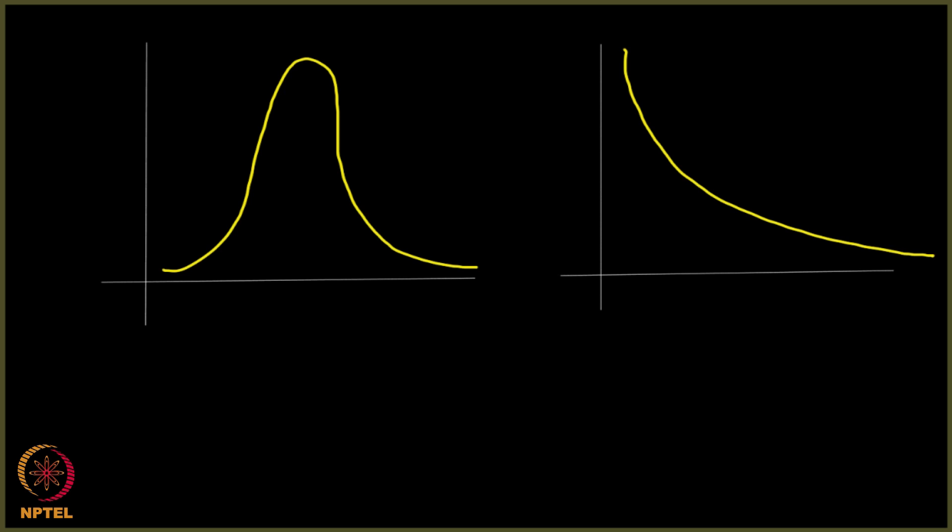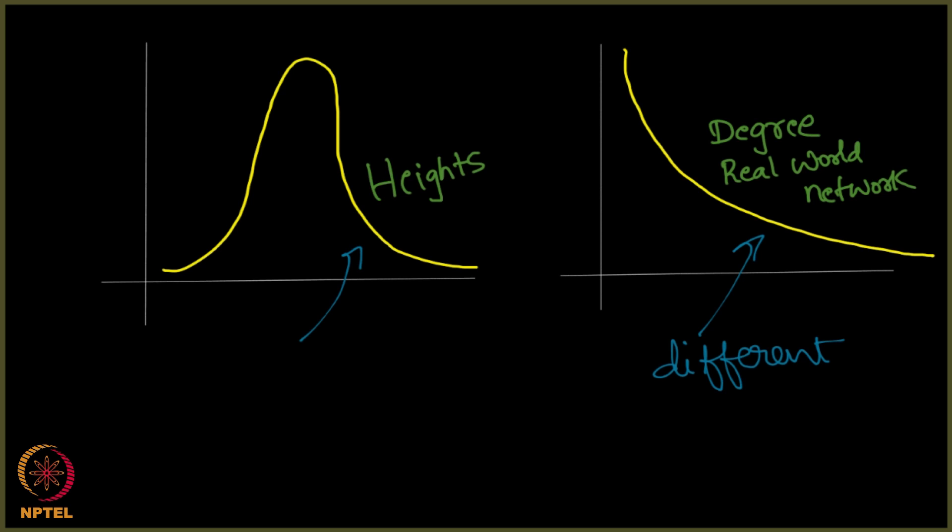The example of heights of people in a town, and this happens to be the degree distribution of nodes in a real world network. Before asking why do we see a very different kind of plot here while in most situations we see this kind of plot, we would like to ask individually why and how does this come about, this one, same time why and how of this as well.